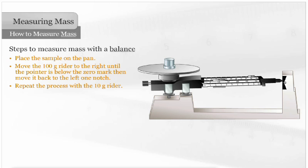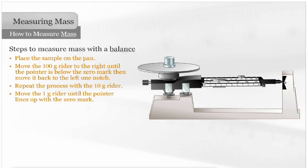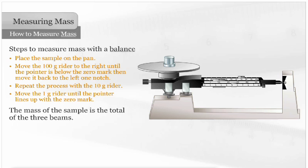Repeat the process with the 10-gram rider. Move the 1-gram rider until the pointer lines up with the zero mark. The mass of the sample is the total of the three beams.